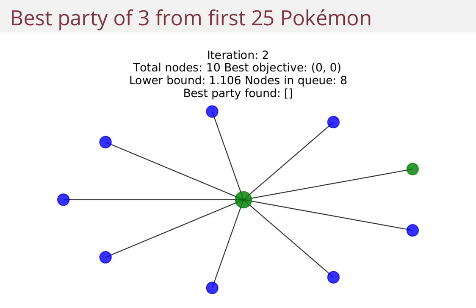You might say why are there so few children nodes here, since we have 25 Pokemon. But remember, we removed every Pokemon that was dominated by another Pokemon. So we actually end up with nine children instead of 25.